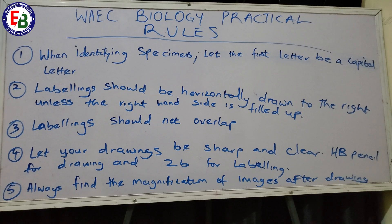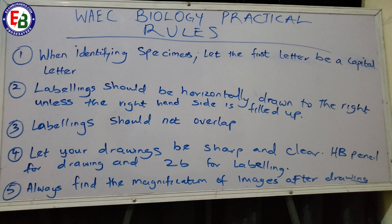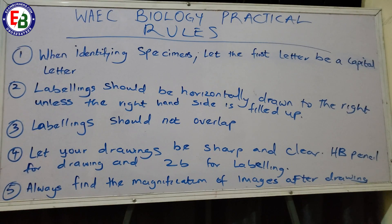Let's go straight to the point. This video wants to discuss WAEC biology practical rules. Your biology practical in WAEC consists of 40% of your grade, so if everything is over 100, your practical takes 40%, while your theory and OBJ share 60%. Anyone looking forward to making an A in any science subject should make sure they bag the 40 marks of the practical. Biology seems simple, but mistakes in these rules will leave you behind.